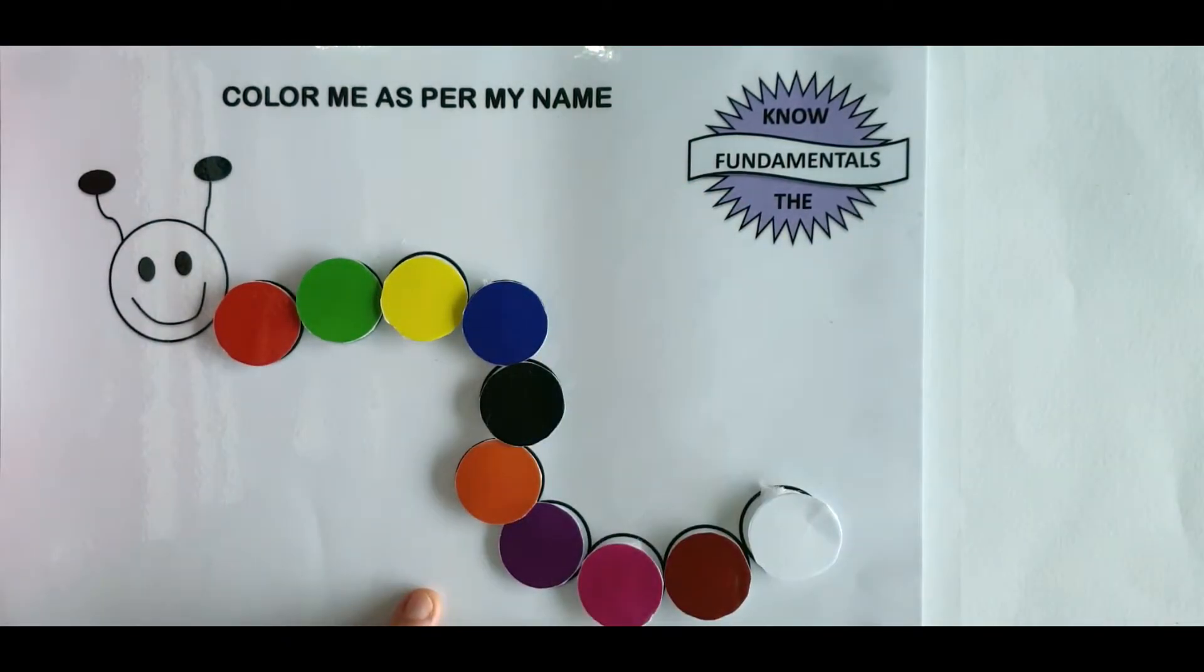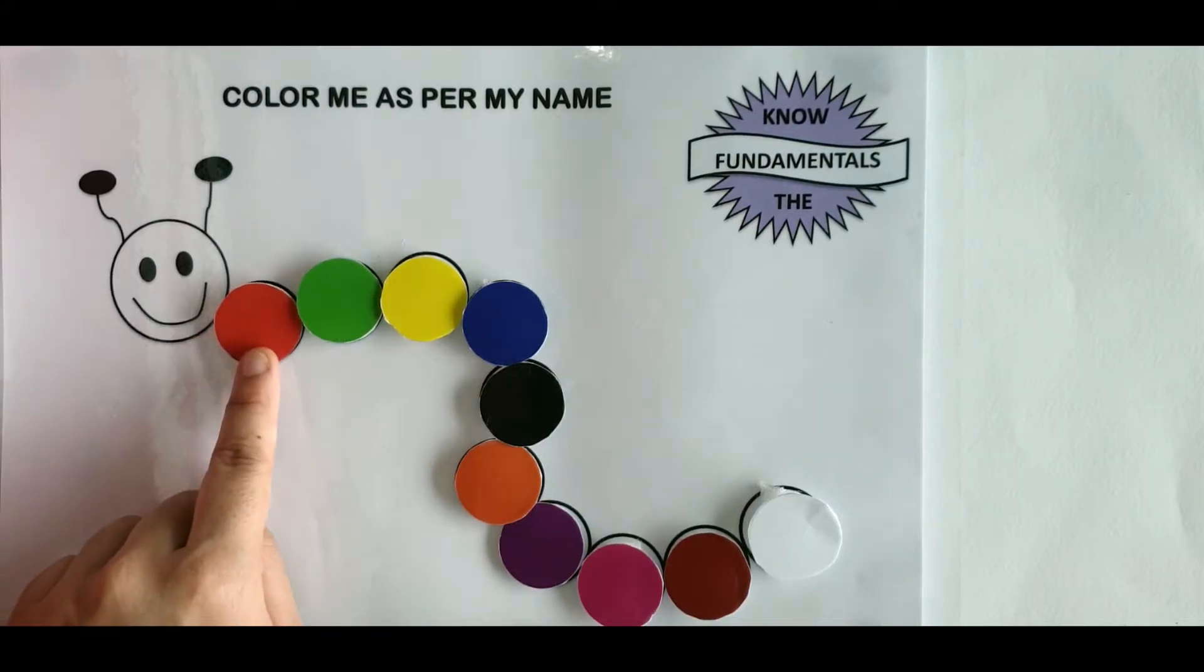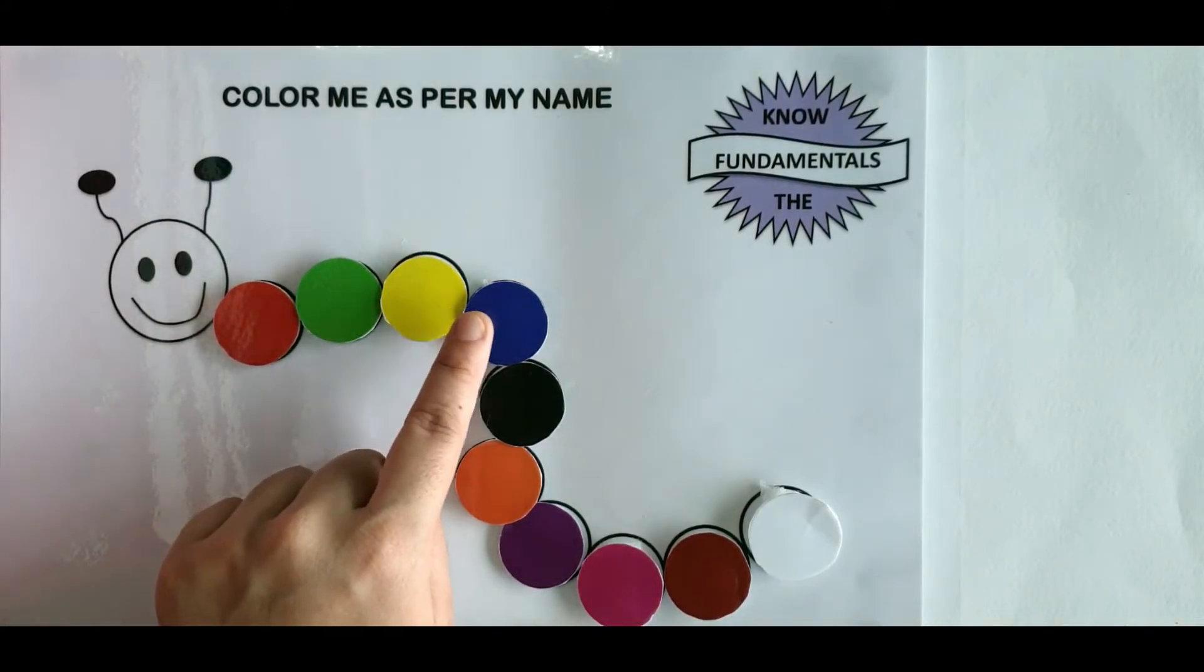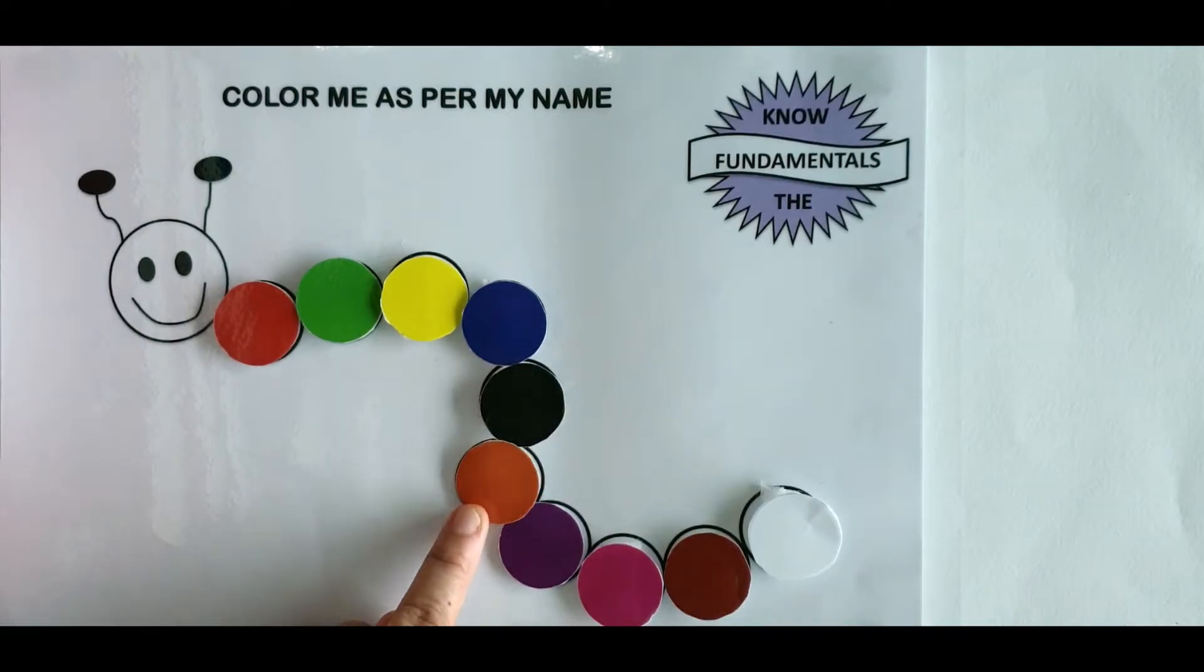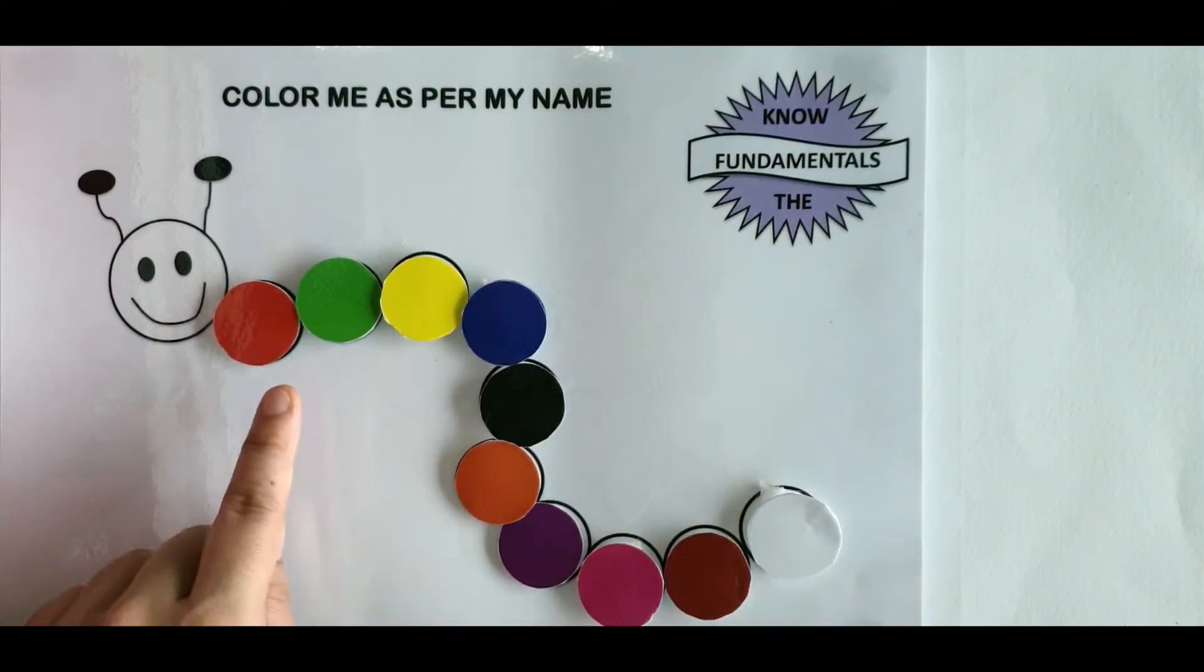Once done, we can ask kids like, can you name the colors? So red, green, yellow, blue, black, orange, purple, pink, brown, white. So this way they can see the bright colors and they can count the colors and they can tell the name of the colors. Now let's see activity number five.